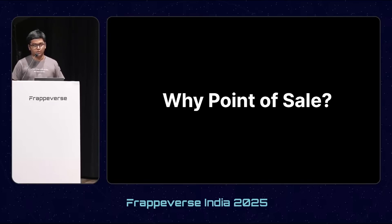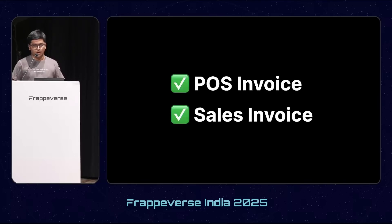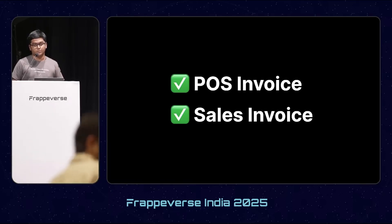So what are the improvements? First, on Point of Sale you can now use both POS Invoice and Sales Invoice. Earlier, you were only able to get the GL entries and the stock ledger entries during POS closing. But now, if you configure it to use Sales Invoice from Point of Sale, it will post the GL entries and stock ledger entries right at the time of selling.